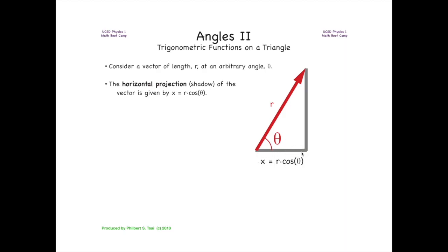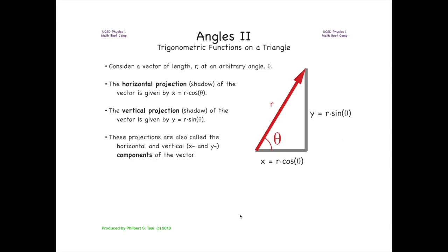The x component of this vector is given by x is equal to r cosine theta, while the vertical projection or vertical shadow of the vector is given by y is equal to r sine of theta. These projections are also called the horizontal and vertical components of this arbitrary vector.